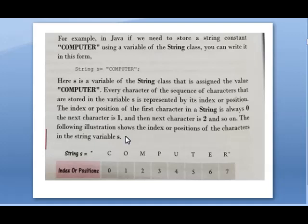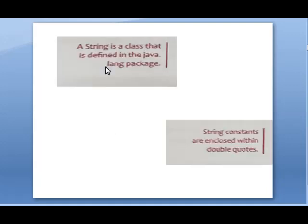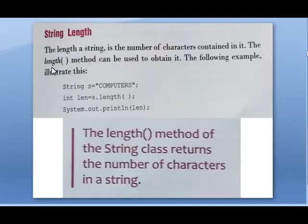The index is otherwise called an address; the next character is at position 1, then 2, and so on. The string variable s stores the string 'computer', and the characters c, o, m, p, u, t, e, r are at index positions 0 through 7 respectively. String is a class defined in the java.lang package, and string constants are enclosed within double quotes.